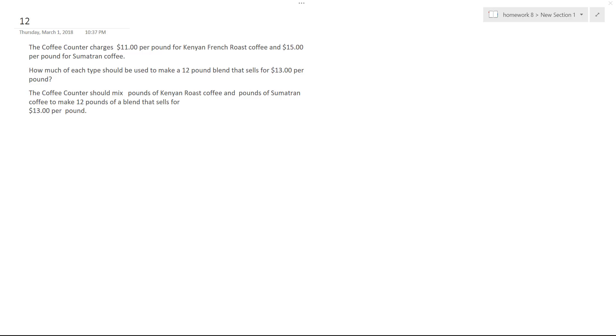A coffee counter charges $11 per pound for Kenyan French Roast coffee and $15 per pound for Sumatran coffee. How much of each type should be used for a 12-pound blend that sells for $13 per pound? So, to solve this, we're going to set up our equations.